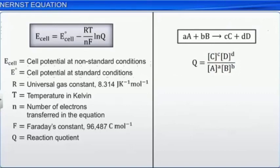By converting natural logarithm into base 10 log and substituting the value of R, F and T equal to 298, the equation can be reduced as shown here.